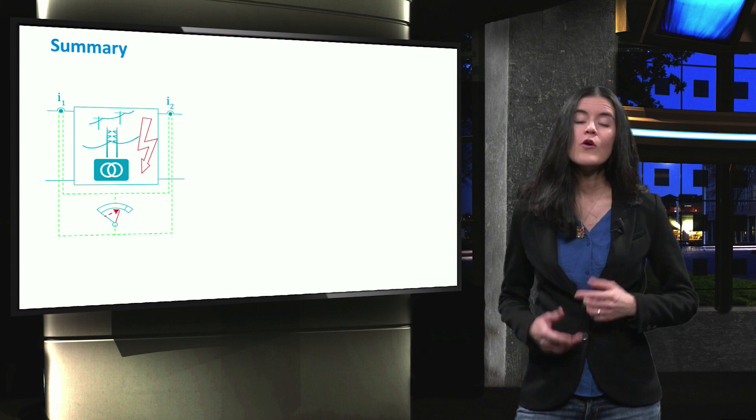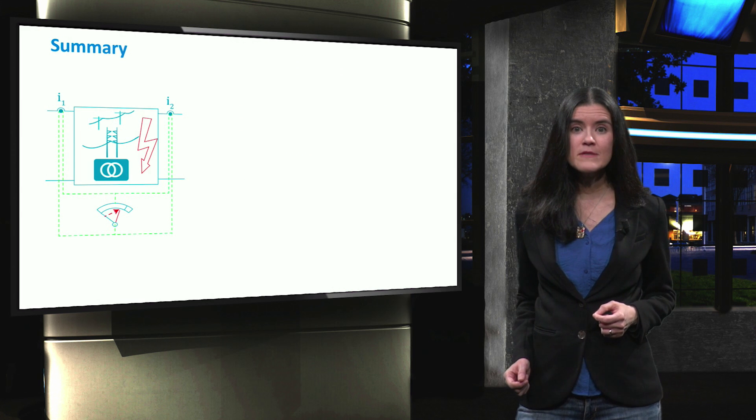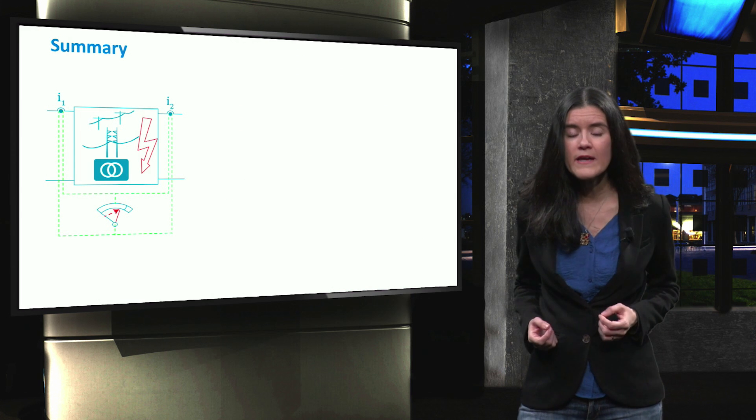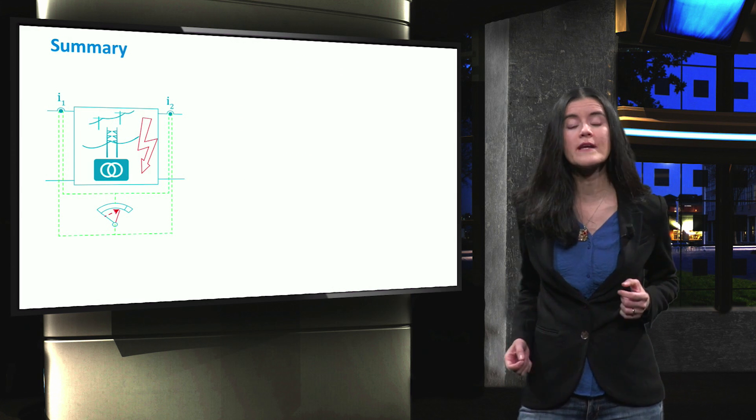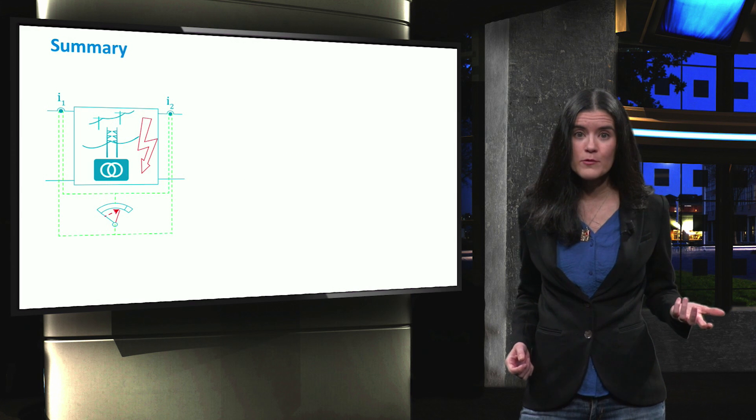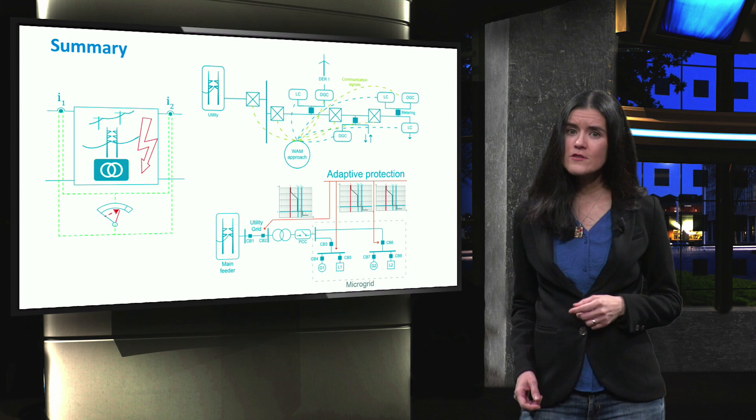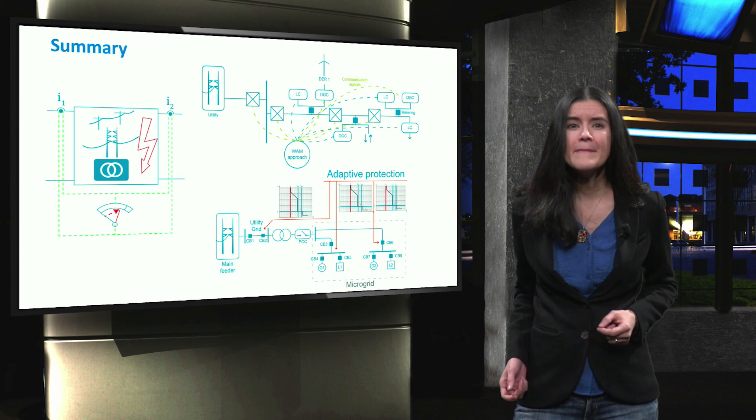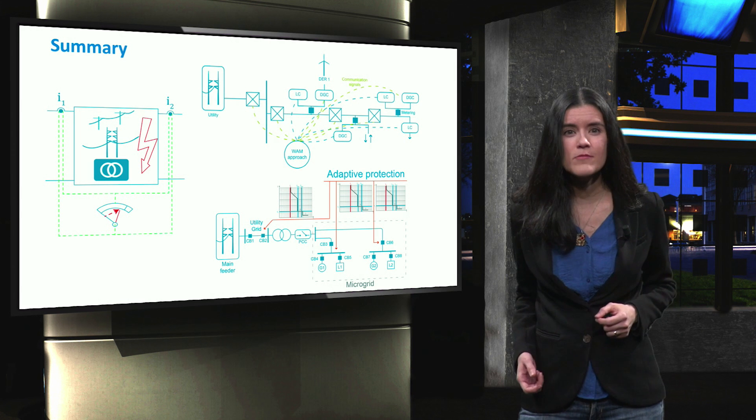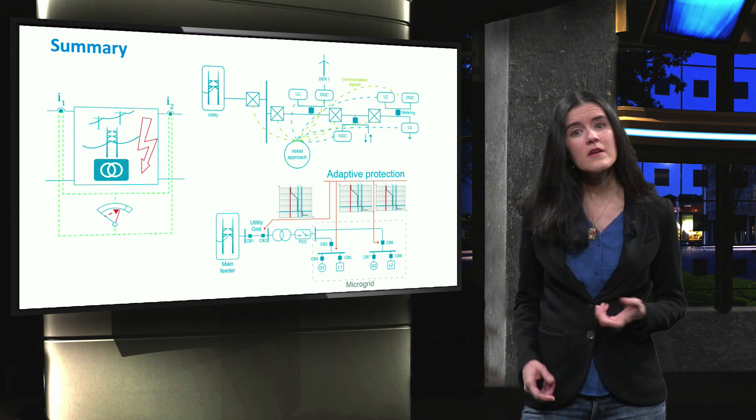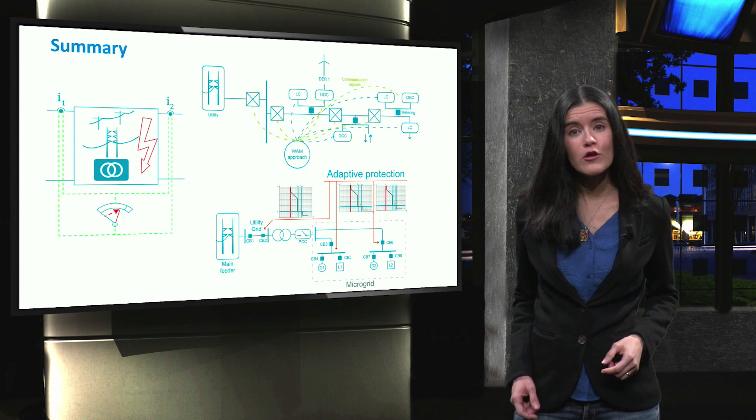Let's now wrap up. We evaluated various protection schemes in microgrids. We saw how communication increases the selectivity of the protection method, such as differential protection, communication-based, and adaptive protection methods. The reliance on the communication network, however, makes the protection system less dependable, needing a backup protection system and increasing the overall cost of the system.